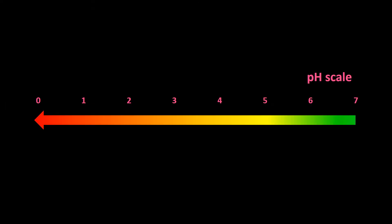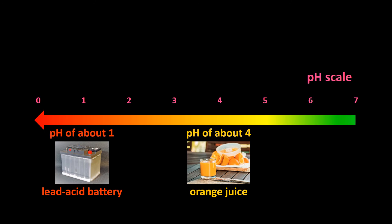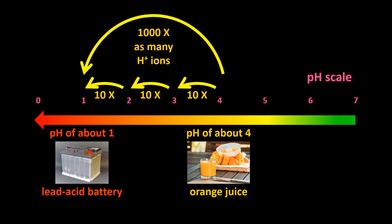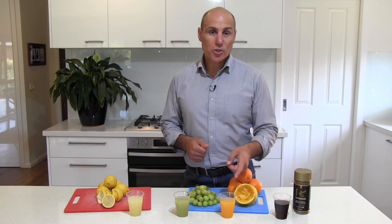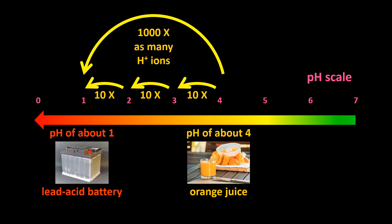If we look at orange juice and the acid in car batteries — lead-acid batteries — with pHs of about 4 and 1 respectively, then 1 liter of battery acid has 10 times 10 times 10, that is 1,000 times as many H+ ions as a liter of orange juice. If orange juice gets into your eyes, it stings a little, but we can obviously drink it. Sulfuric acid, though, won't just sting if it gets in your eyes, and you definitely don't want to drink it.